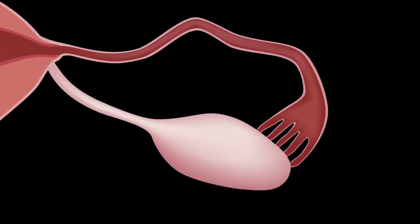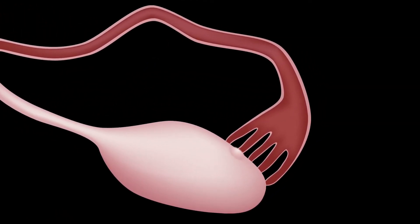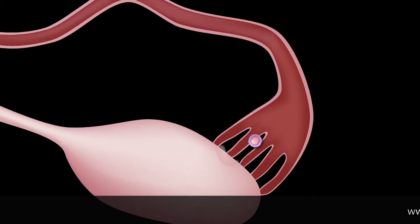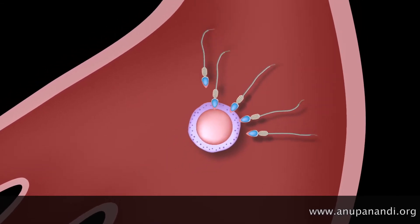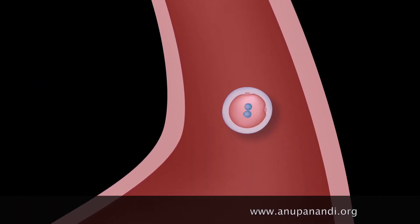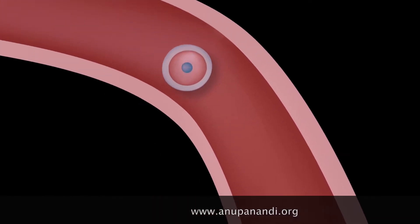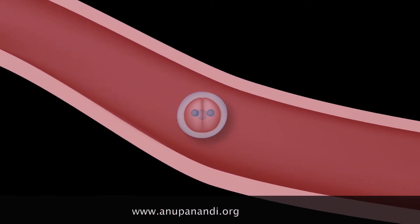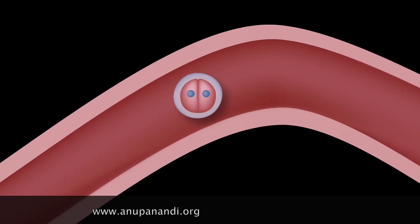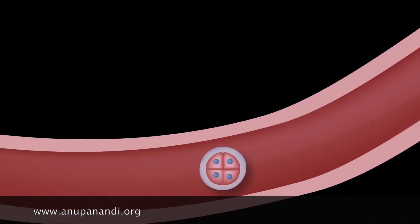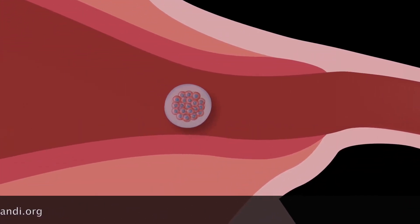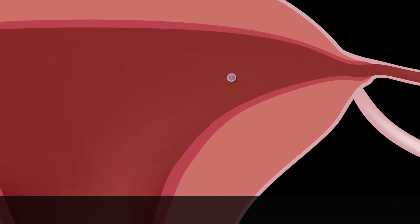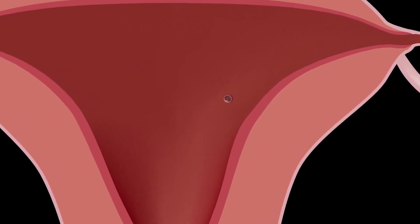Every month the ovary releases an egg which is picked up by the fallopian tube. In the tube the egg gets surrounded by sperm and only one will get entry into the egg and fertilize it. The embryo created stays in the tube for four days and keeps developing. The tube provides the environment needed for embryo development and also moves the embryo towards the right direction by ciliary and muscular action. By day five it travels to the uterus, where it gets implanted and pregnancy occurs.